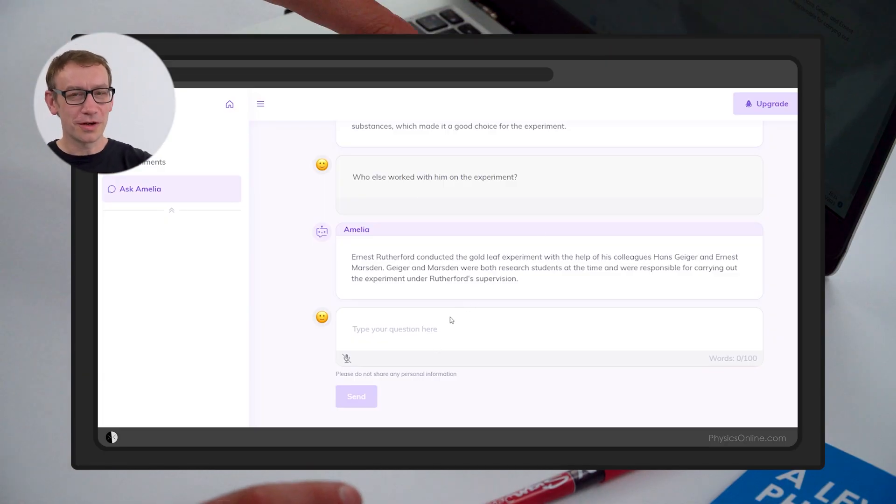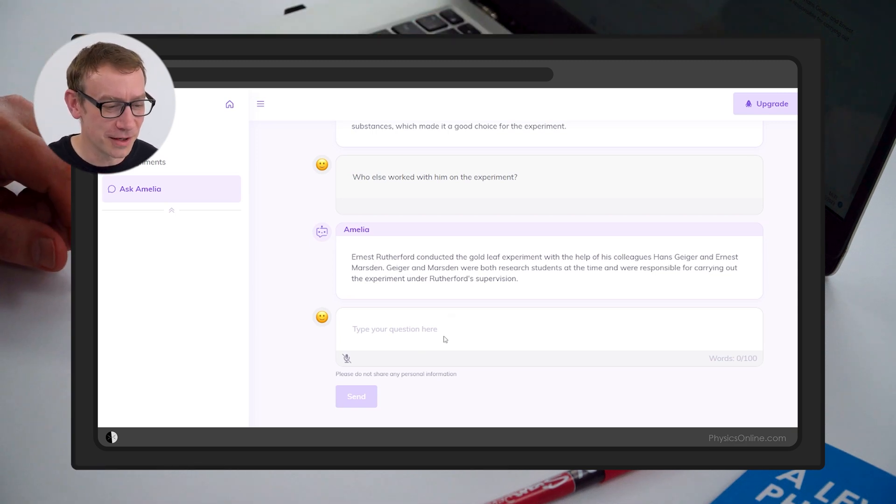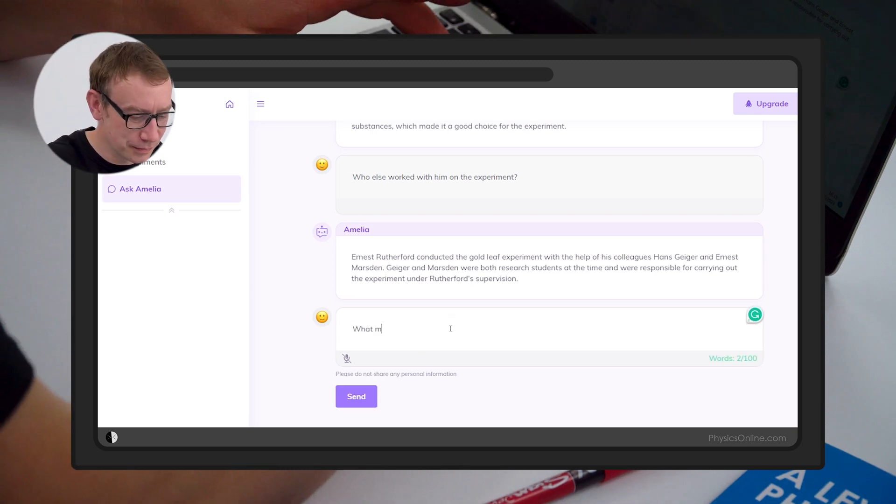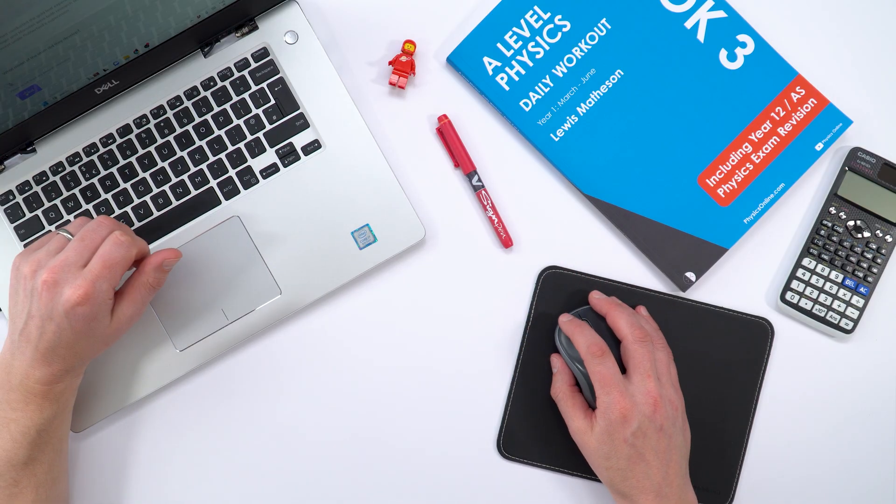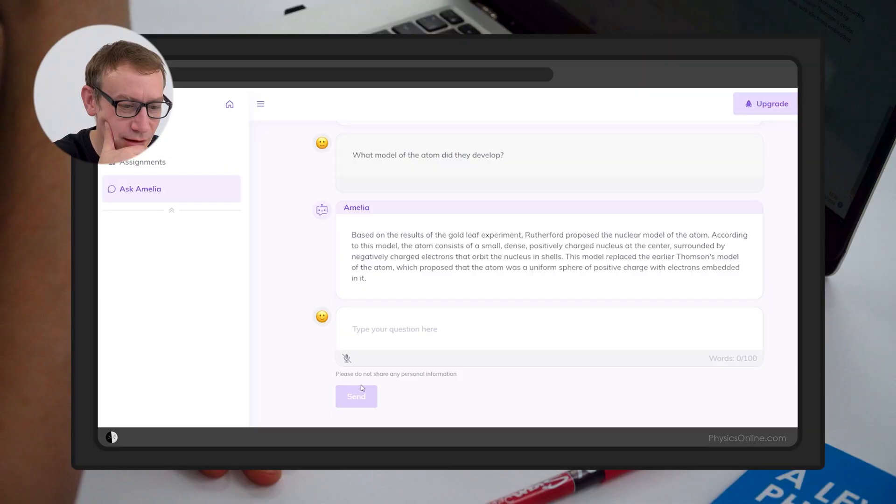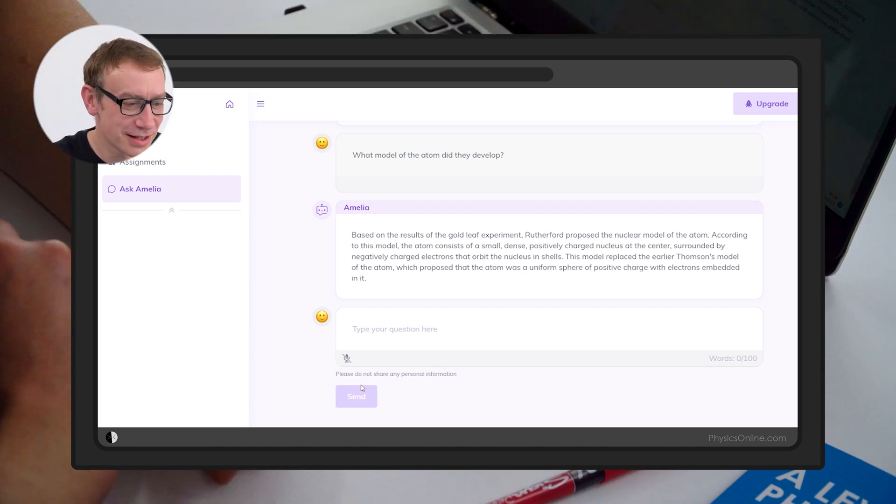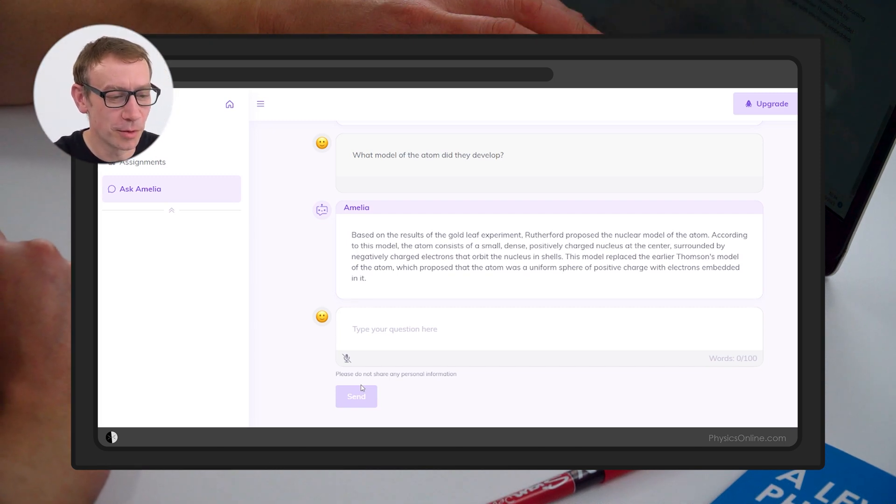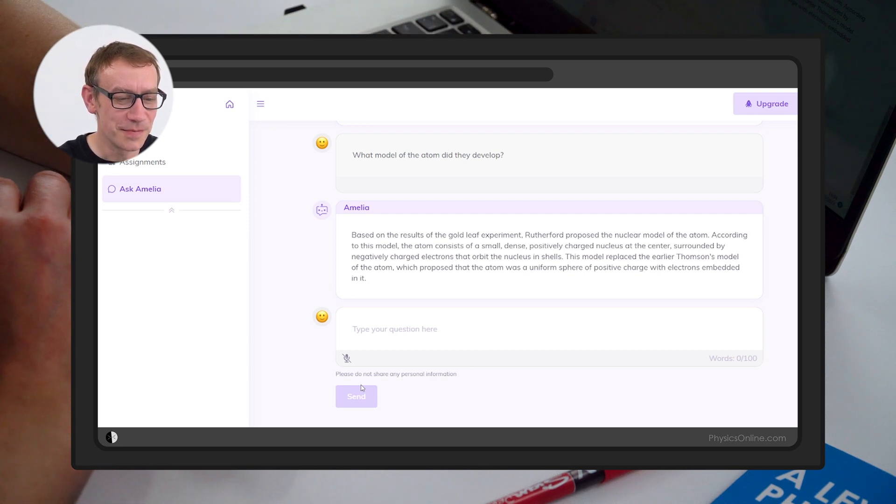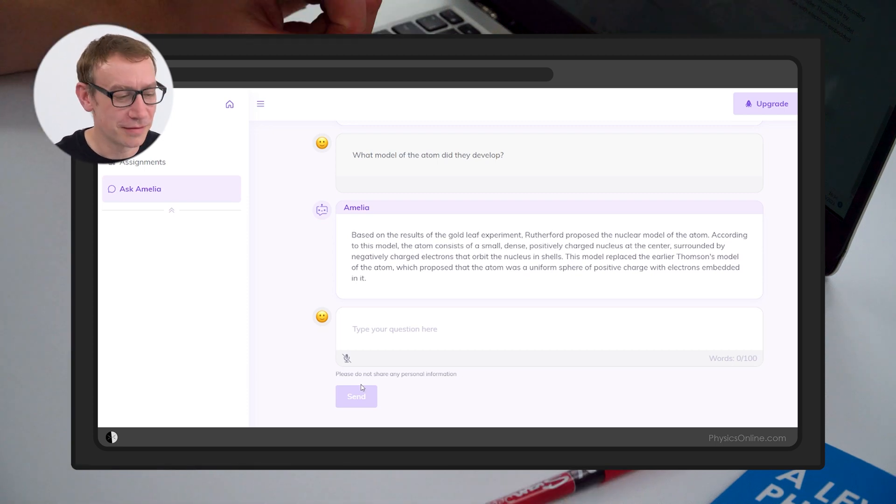So that one there is all good information. This is like your standard GCSE staple information. And then you can just keep asking it questions. So what model of the atom did they develop? Hopefully it's going to say the nuclear model or maybe the Bohr model later on. Let's see what it says. Yeah, here we go. So it does say based on the results, Rutherford proposed the nuclear model of the atom. That's correct. Atom consists of a small dense positively charged nucleus at the centre.